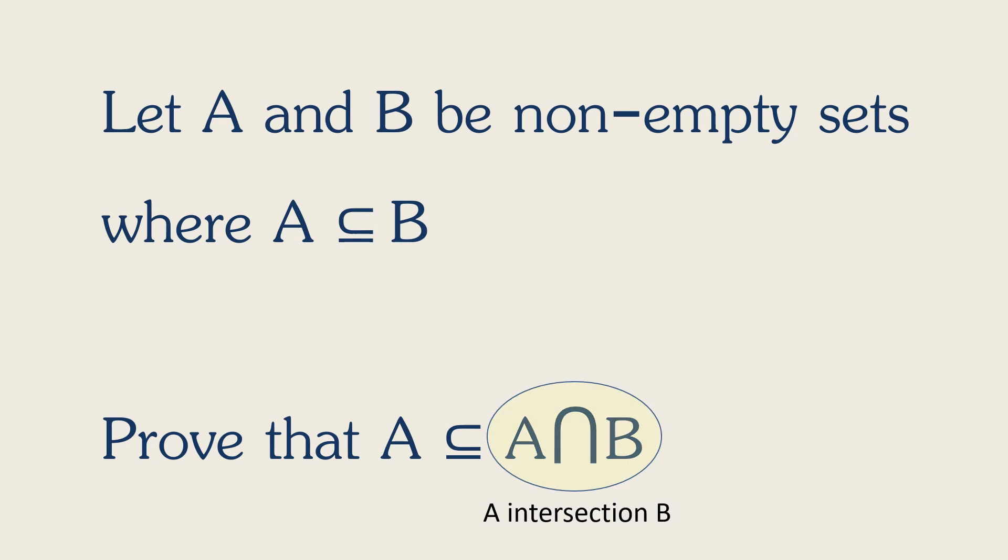A intersection B is the set of things in both A and B. So if A is contained in B, then all the things in A are in B, so A should also be contained in the set of things in both A and B, right? Does that make sense?